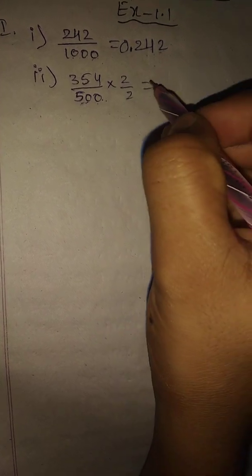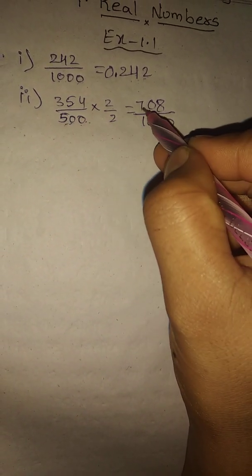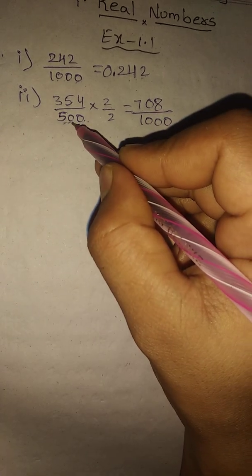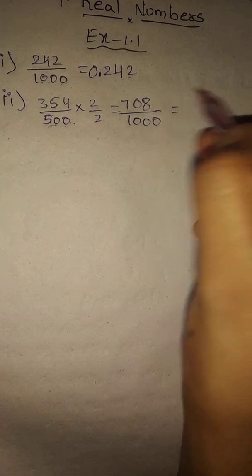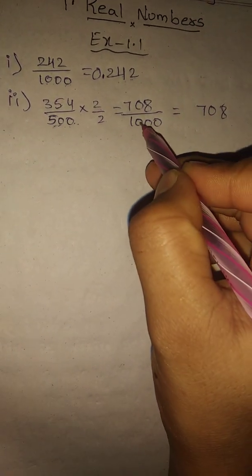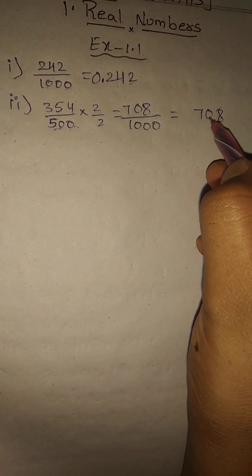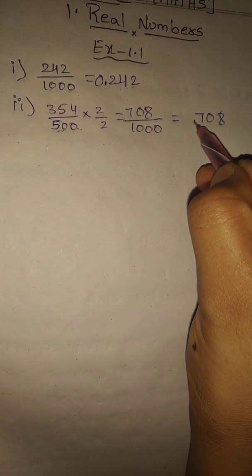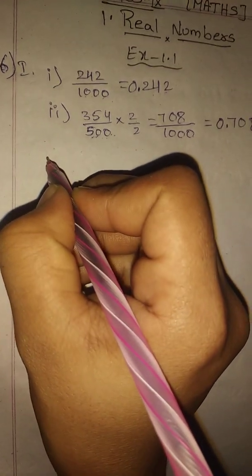Multiply both numerator and denominator by 2: 354 times 2 equals 708, and 500 times 2 equals 1000. Now write the numerator as it is, count three zeros in the denominator, and count three digits from the right side — one, two, three — keep the decimal point there. Before the digits there is nothing, so write zero. The answer is 0.708.